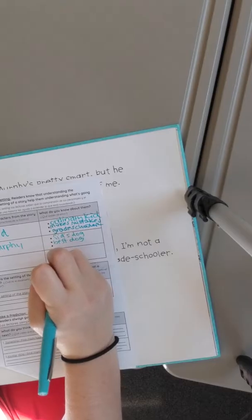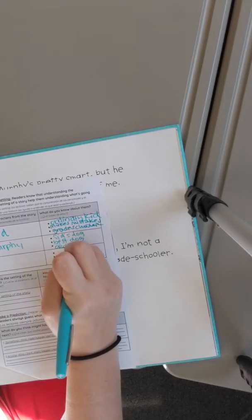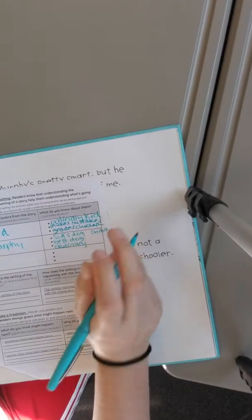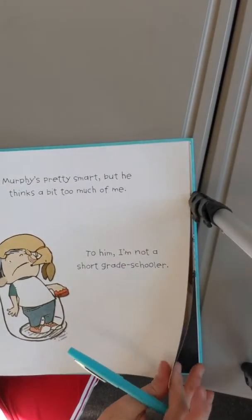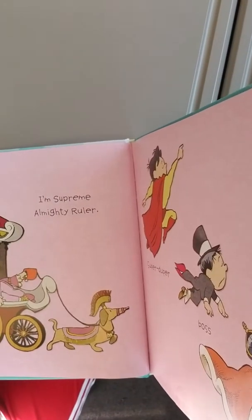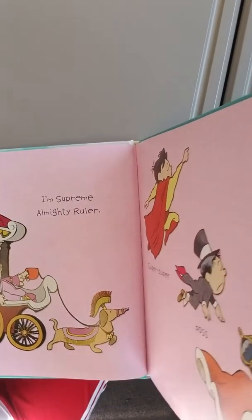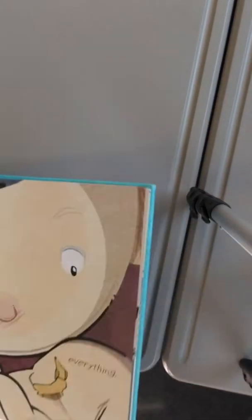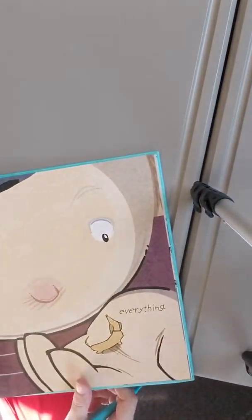And for Murphy we could add ordinary and smart. I'm supreme almighty ruler, super duper boss and king of absolutely everything.